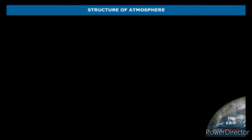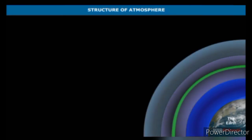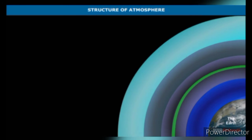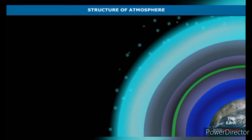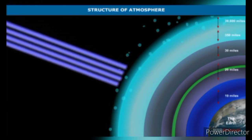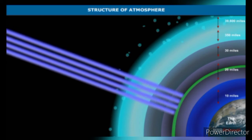Air around the Earth is like a shield and is made up of several layers. There are five important layers, which together act as a protective shield around the Earth. This layered structure is also responsible for keeping the Earth warm at night. The upper layer does not allow the bulk of harmful radiation from the Sun or outer space — such as gamma rays and ultraviolet rays — to reach the Earth's surface.